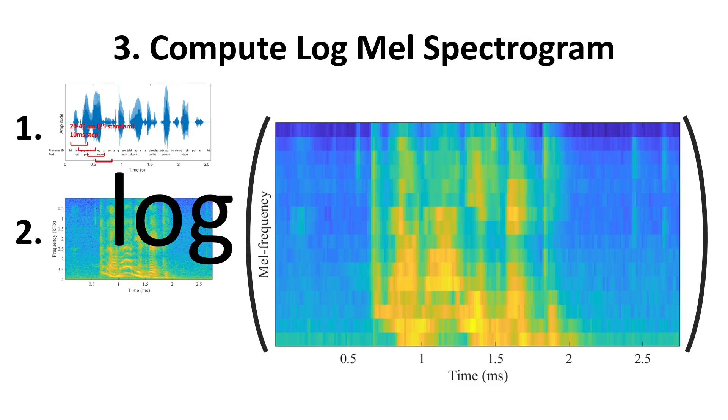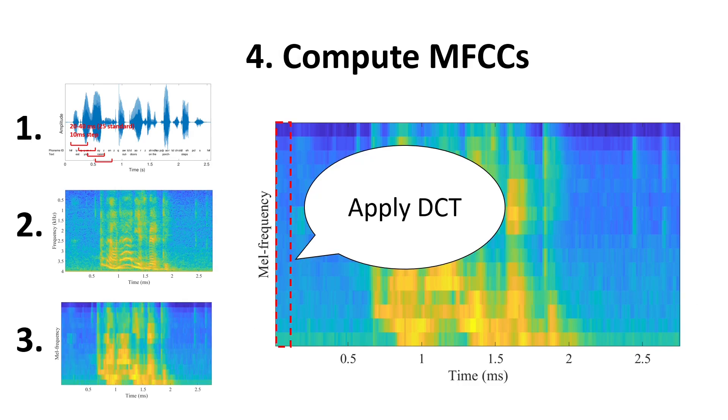Then, we apply the logarithm on this spectrogram, and finally, we use a Fourier transform, usually the discrete cosine transform, to obtain the mel frequency cepstral coefficients.